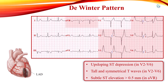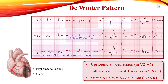In addition to the DeWinter pattern, subtle ST elevation in AVR and reciprocal change in leads 3 and AVF suggests high lateral involvement. This is consistent with left anterior descending artery occlusion that occurs proximal to the first diagonal branch.